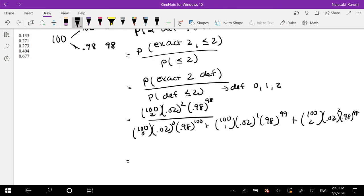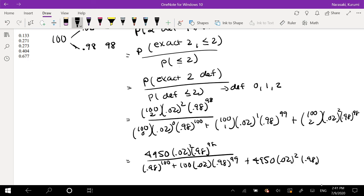100 choose 2 is equal to 4950, 0.02 squared, 0.98 to the 98, over 100 choose 0 is just 1, 0.02 to the 0 is just 1, so this is 0.98 to the 100, plus 100 times 0.02, 0.98 to the 99, plus 4950, 0.02 squared, 0.98 to the 98.